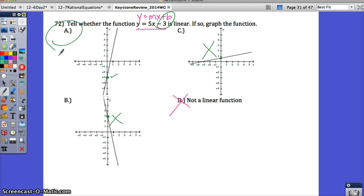You can also check the slope. Did I go 5 or 5 over 1 when I rise? Rise 1, 2, 3, 4, 5 over 1. That works. The correct answer is A.